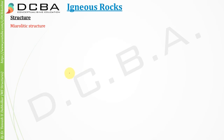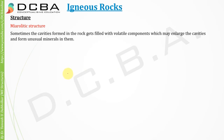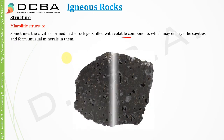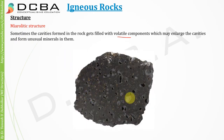Next is miarolytic structure. Sometimes the cavities formed in the rock get filled with volatile components, which may enlarge the cavities and form unusual minerals in them. Such a structure, where cavities are filled with minerals, is called miarolytic structure.